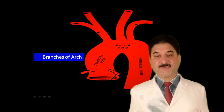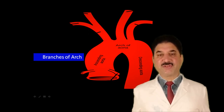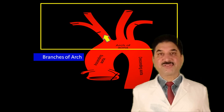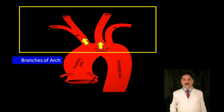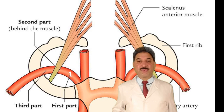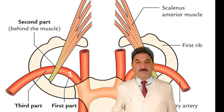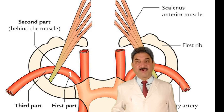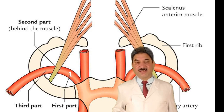Branches of the aorta: on the right side the aorta gives the right brachiocephalic trunk; on the left side it gives the left common carotid artery and left subclavian artery. The right brachiocephalic trunk divides into the right common carotid artery, which supplies blood to the head and neck, and the right subclavian artery, which supplies blood to the upper limb. The right subclavian artery is divided by the scalenus anterior muscle into three parts: the first part medial to, the second part posterior to, and the third part lateral to the scalenus anterior muscle.